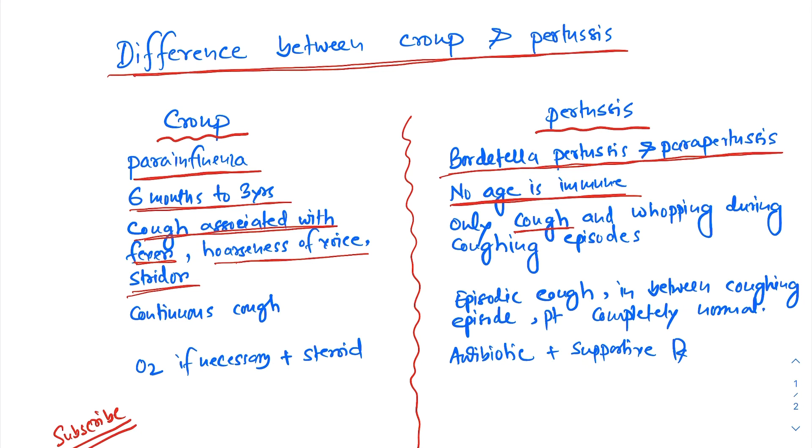The coughing in case of croup is continuous cough, meaning the patient coughs throughout the day and night. But in case of pertussis, coughing is episodic, meaning episodes of cough occur and in between the episodes the patient is completely normal.